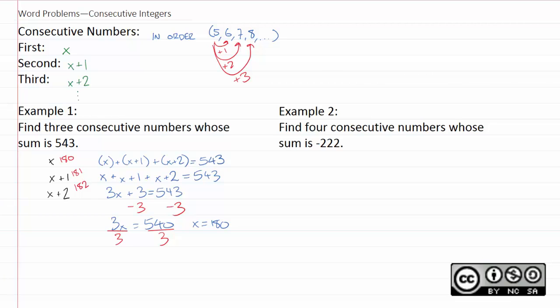Example two is the same thing. You're just going to have four integers instead. So x, then the next one is x plus 1, then x plus 2, then x plus 3. And again, if you add them all together, you get negative 222.